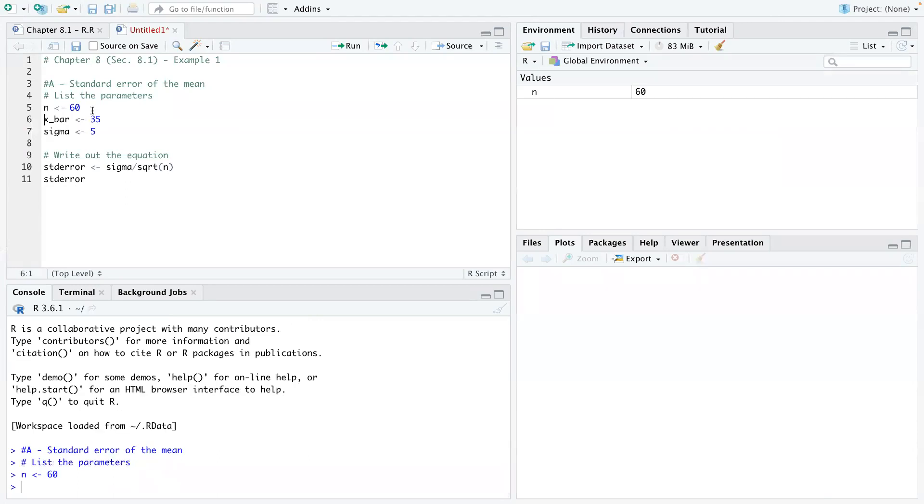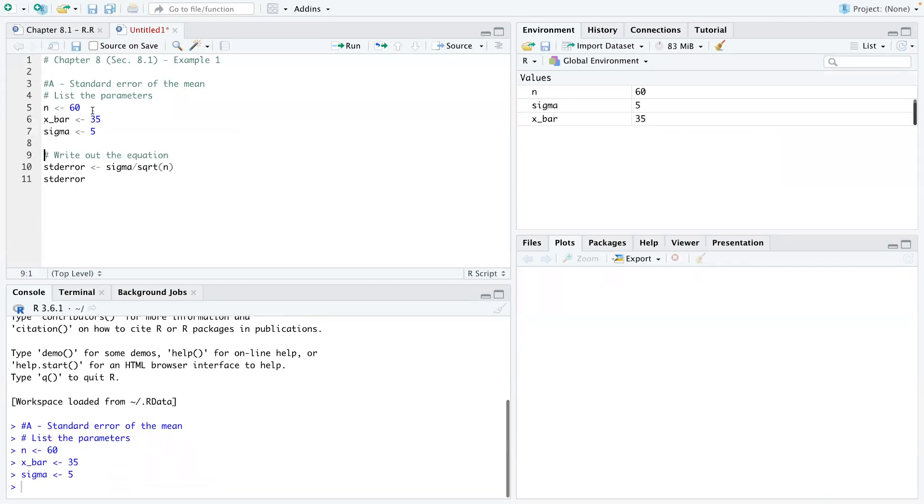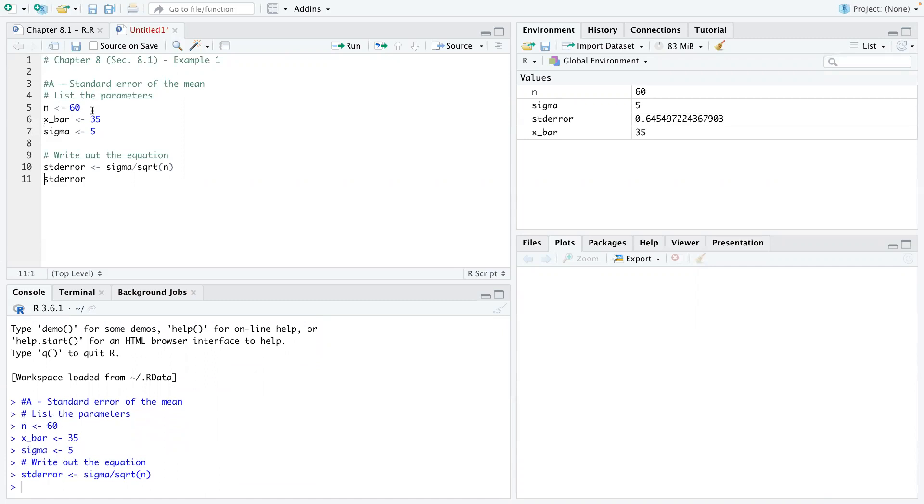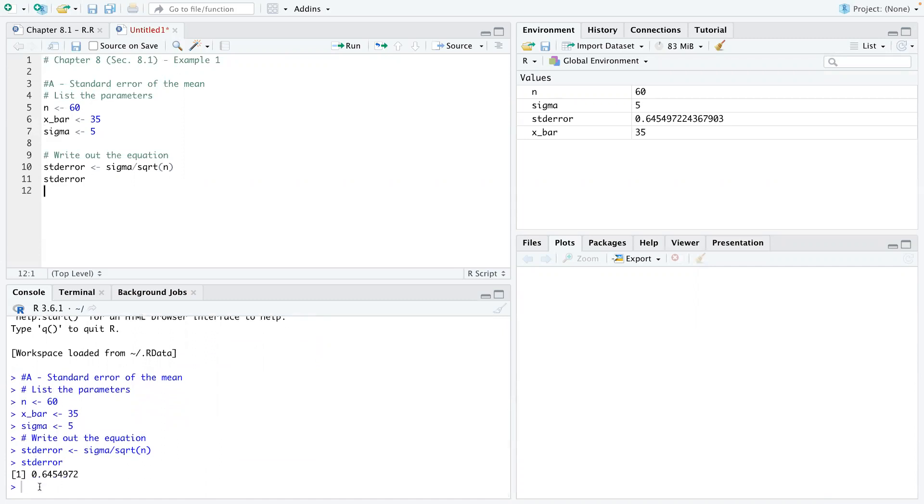So here. Boom. So you see here that our standard error is 0.645. So we can just write 0.645. That's our standard error. Then that's basically our answer for A.